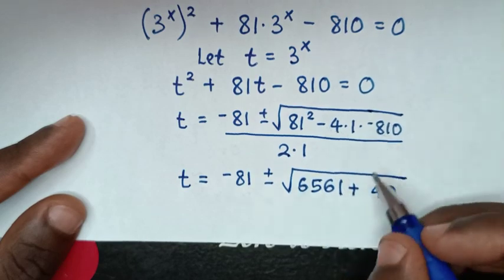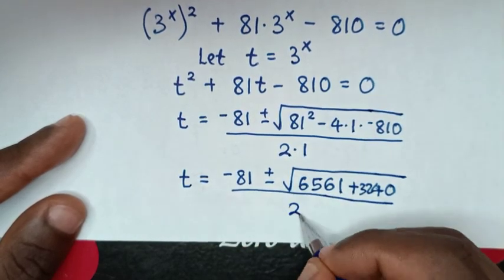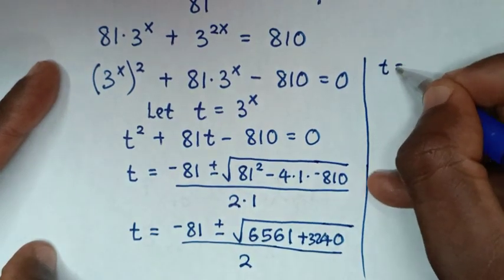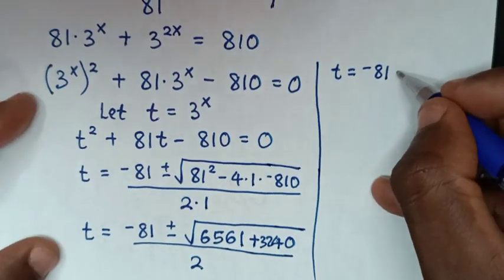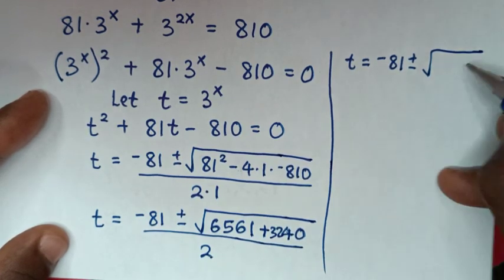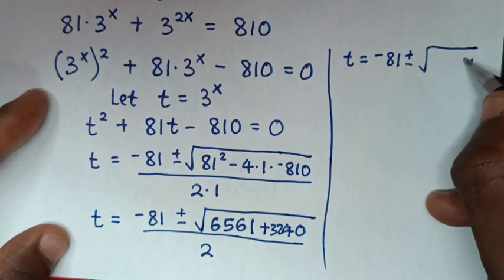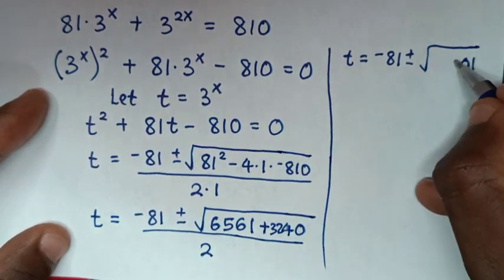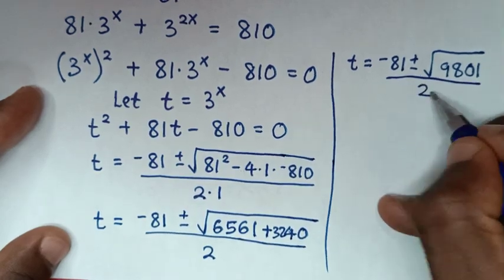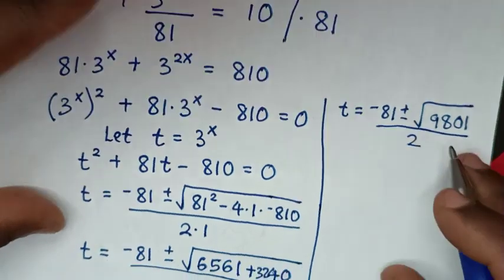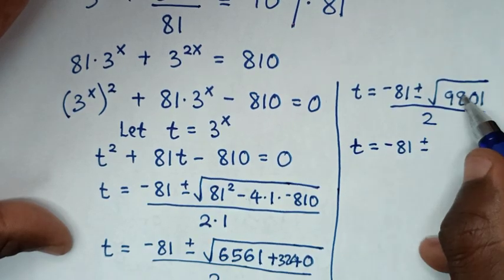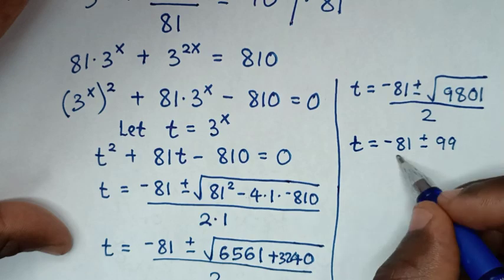Then it will be t is equal to negative 81 plus or minus square root of 81 squared, which is 6561, minus 4 times negative 810, which gives positive 3240. So 6561 plus 3240 is 9801, and the square root of 9801 is 99. So t is equal to negative 81 plus or minus 99, over 2.